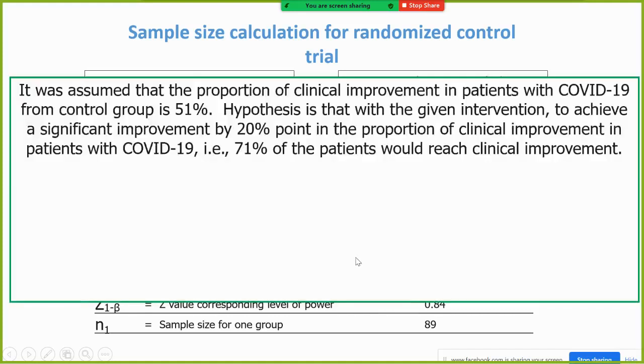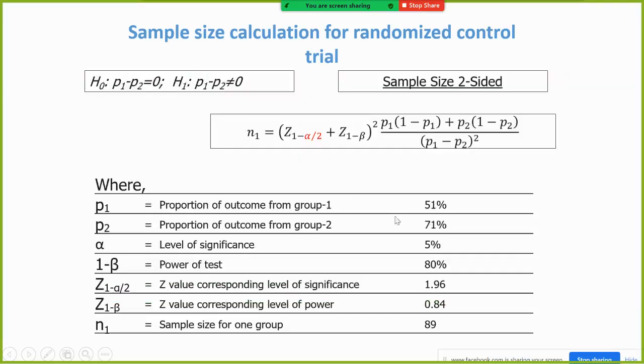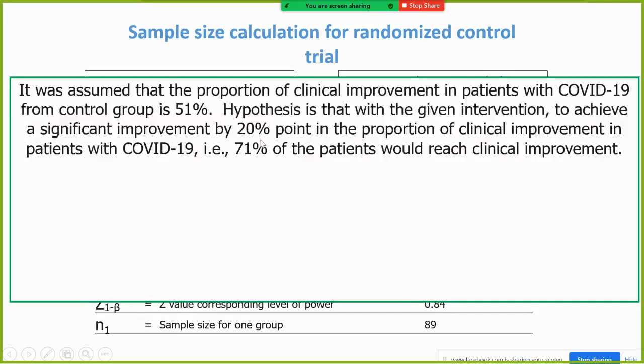The interpretation of this table is: it is assumed that the proportion of clinical improvement in the patient with COVID-19 from control group is 51. And hypothesis is that with the given intervention, to achieve a significant improvement by 20 percentage point in the proportion of clinical improvement in the patient with COVID-19, that means 71% of the patient will receive clinical improvement.